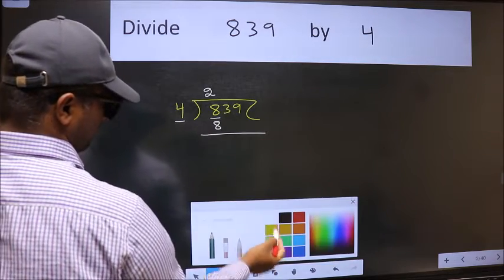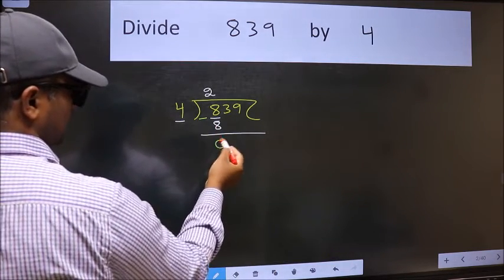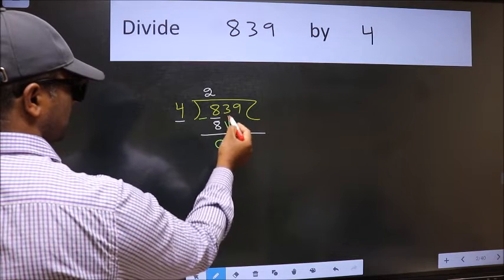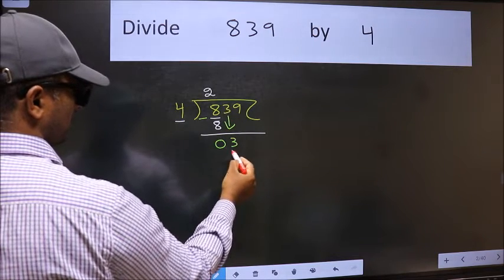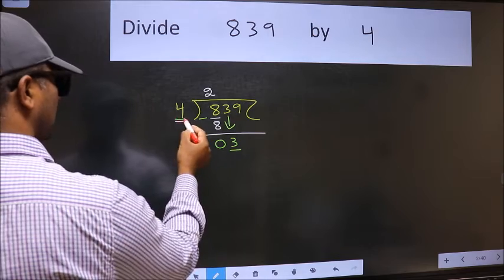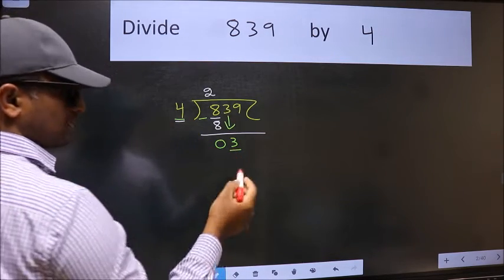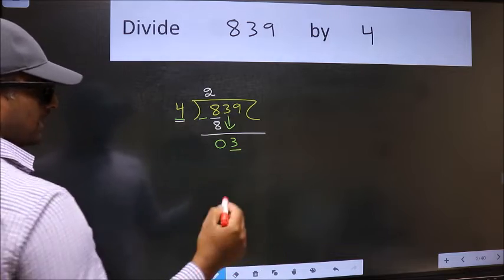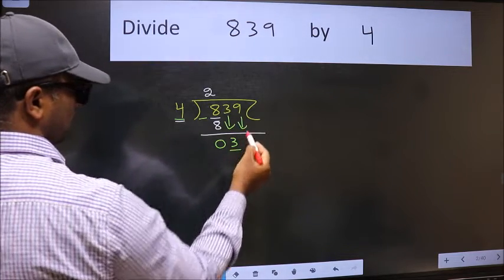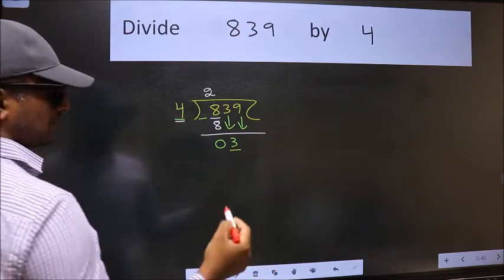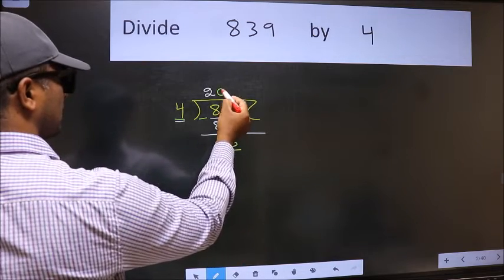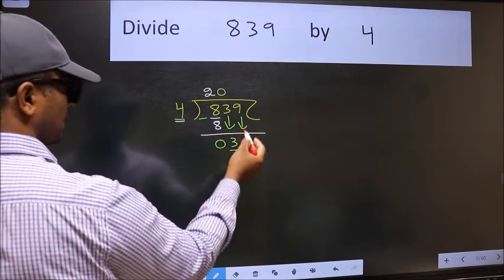Now we should subtract. We get 0. After this, bring down the beside number, so 3 comes down. Now here we have 3 and here 4. 3 is smaller than 4, so we should bring down the second number. The rule to bring down the second number is we should put 0 here, then only we can bring this number down.